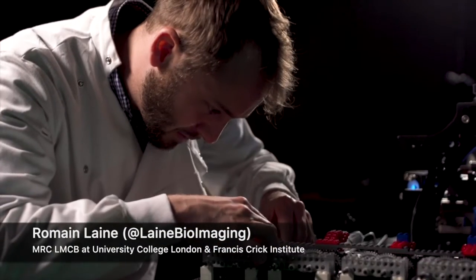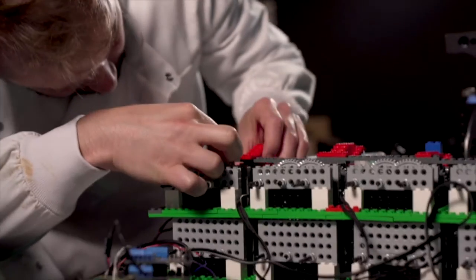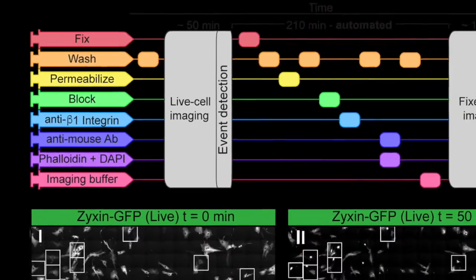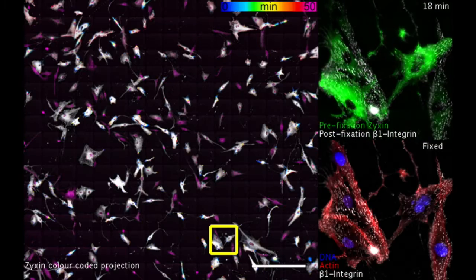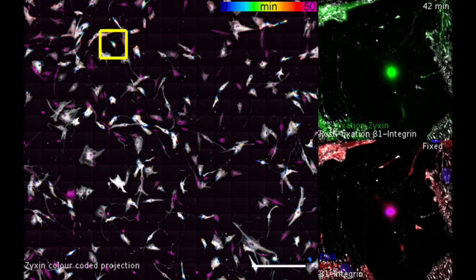Hi, I'm Roman Lehn. Let me tell you about some of the experiments that we can do with Pumpey. Pumpey can automatically cycle through multi-step liquid exchange onto the sample. This allows it to carry out protocols with several labeling steps sequentially.